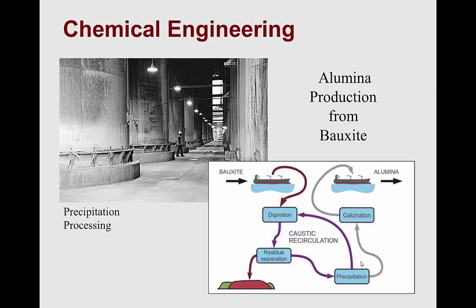The bauxite is a rock, and to get the aluminum out we go through several processes. One of the first involves chemical engineering, where the compound alumina — aluminum oxide — is produced from the bauxite. This slide shows a step called precipitation processing where the bauxite is digested in a caustic compound. Through a precipitation process, where stuff settles out and falls out, we get a precipitate that can then be calcinated. That process results in alumina, which is rich in aluminum, with waste residue removed. Alumina production often occurs close to the mining site to reduce transportation costs.